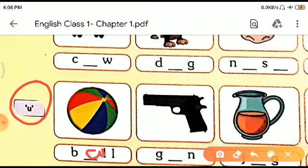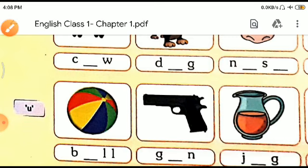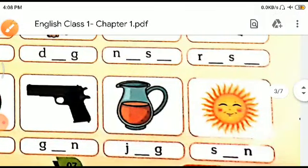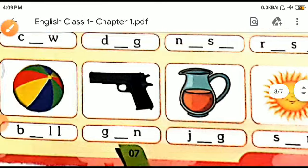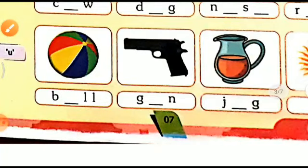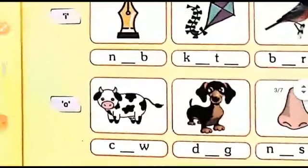Now, the second one. What is this? It is a gun. G-U-N, gun. The third picture. What is that? This is a jug. And this, it is a sun. It is the sun. S-U-N, sun.